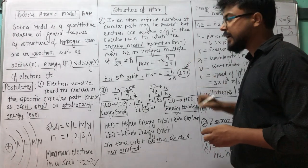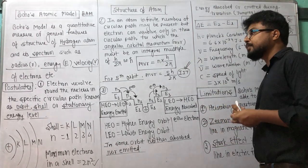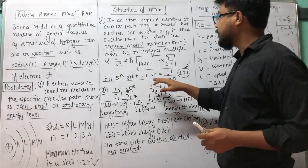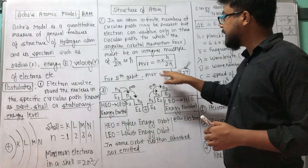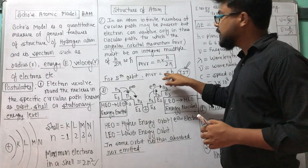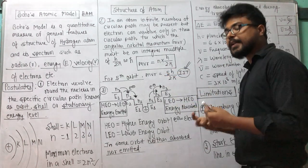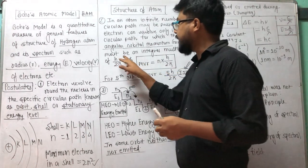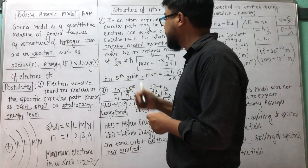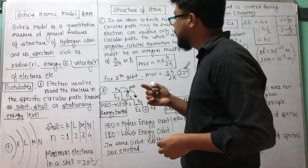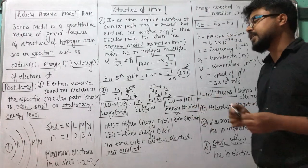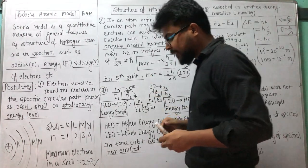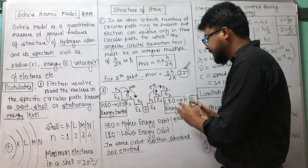One question is directly asked by IIT: for the fifth orbit, what will be the value of orbital angular momentum? So mvr = nh/2π, where n = 5, giving 5h/2π. This can also be written as 2.5h/π, or represented using h-bar notation. So many concepts are covered here. The next postulate is the third one, which I will describe briefly.